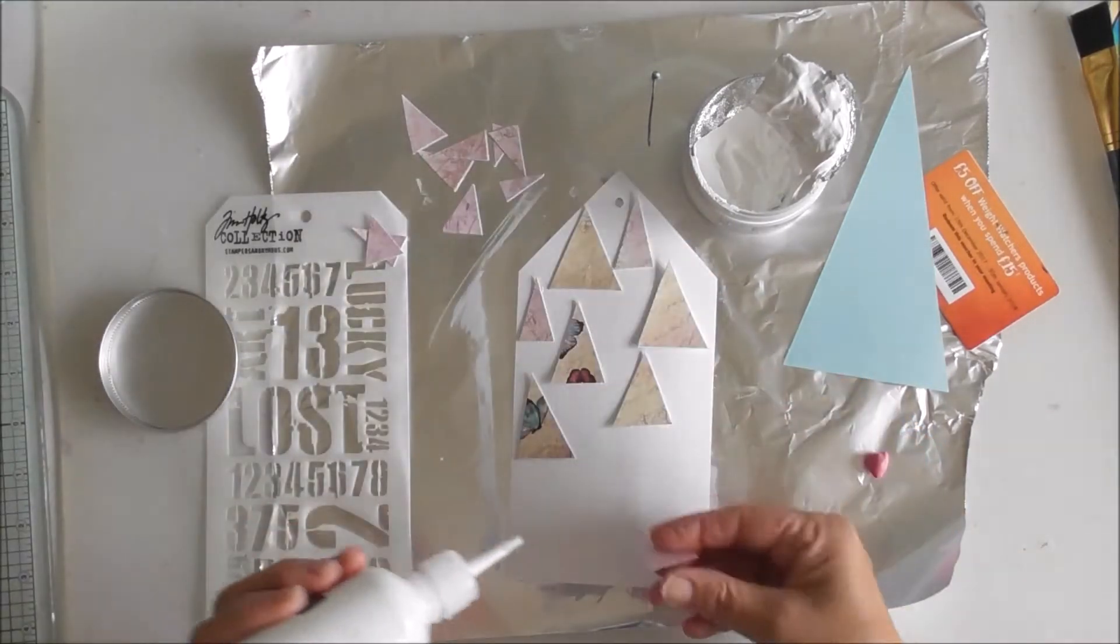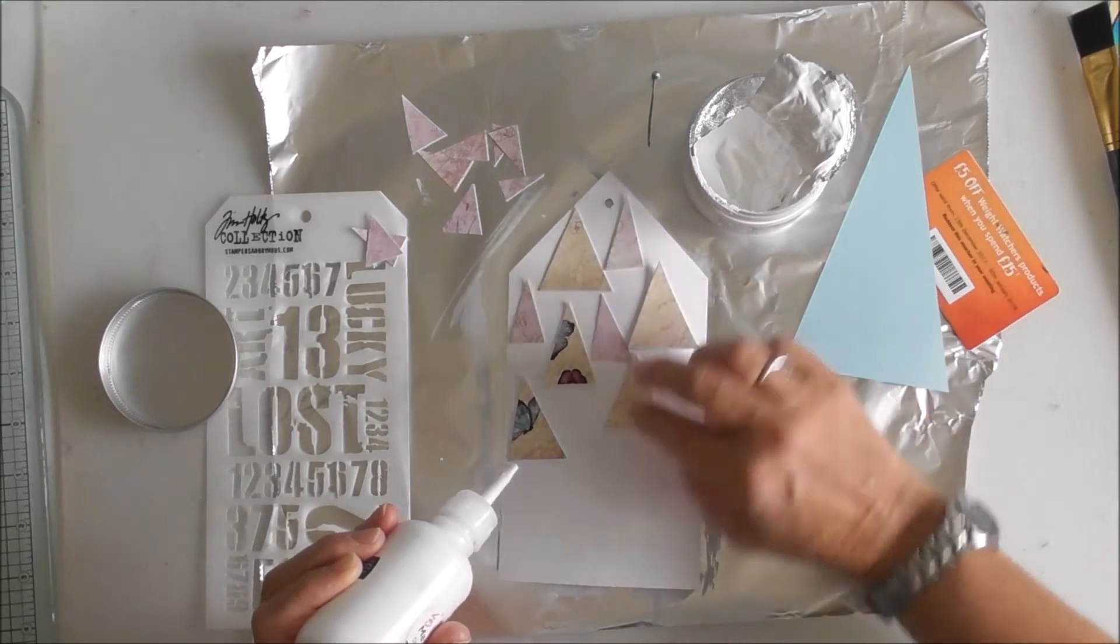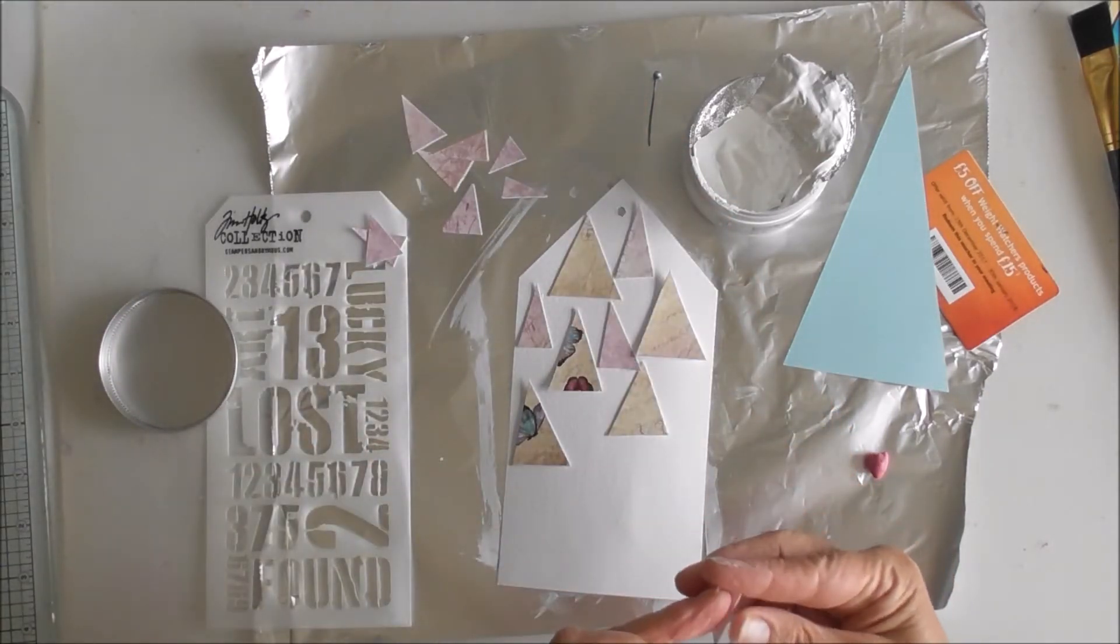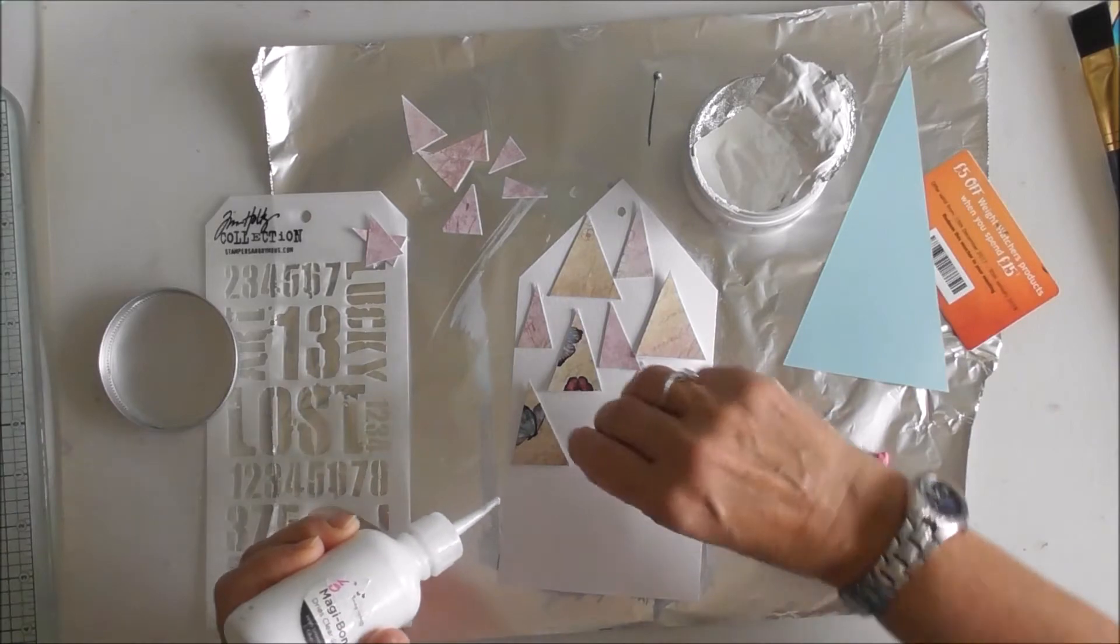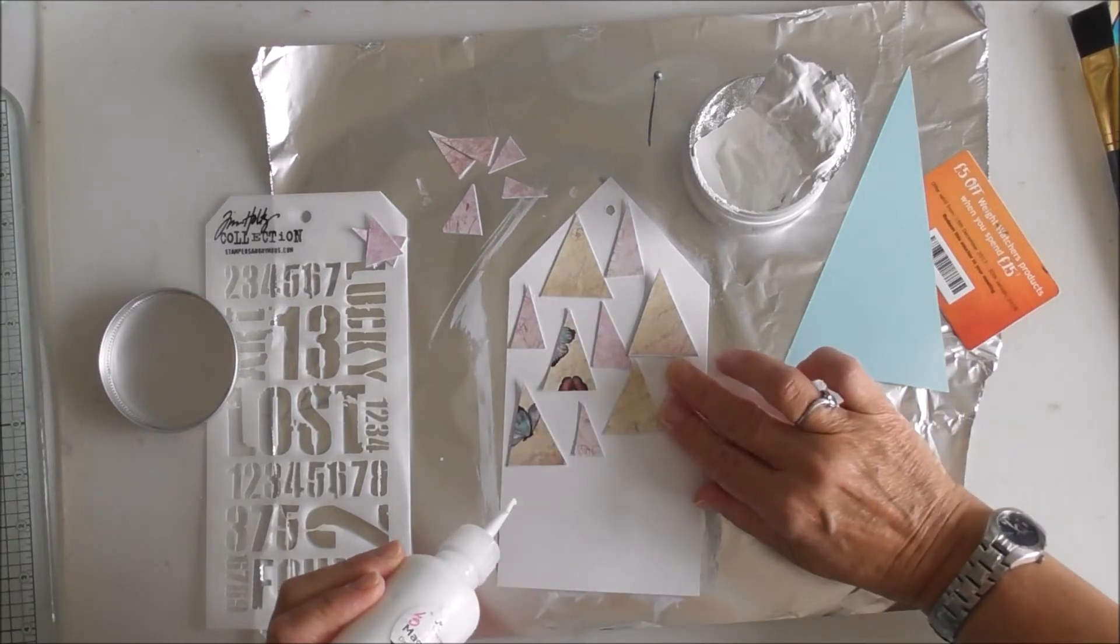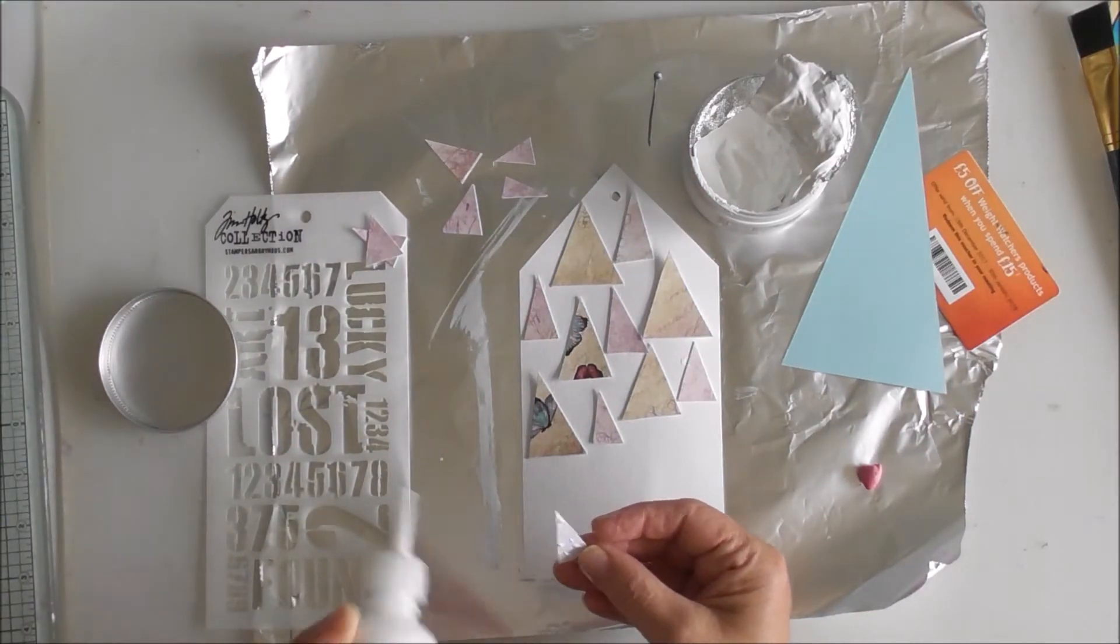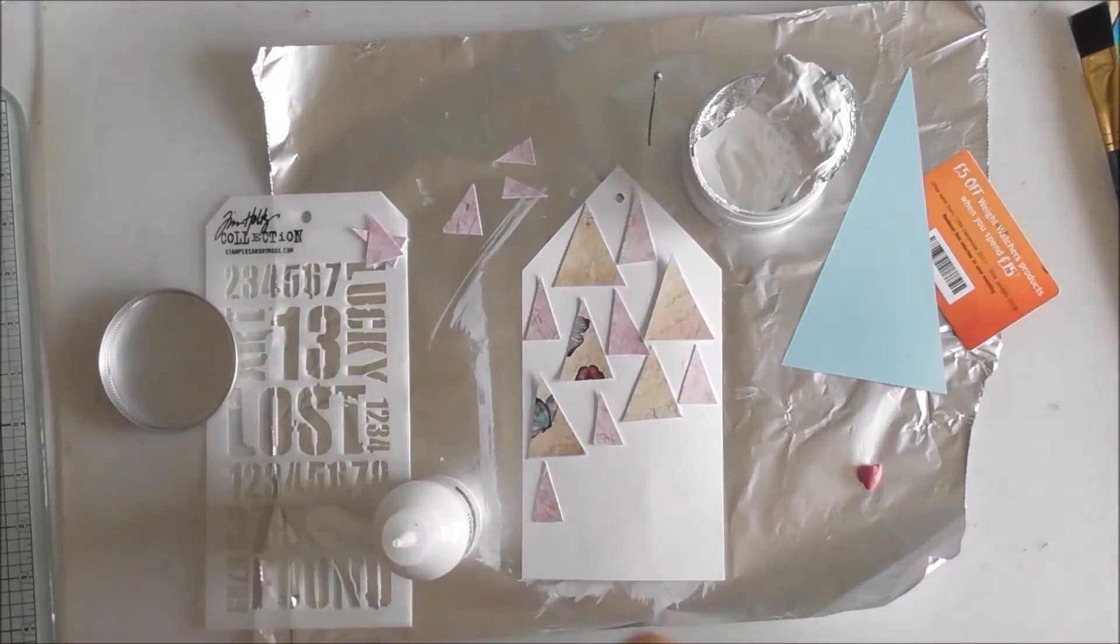They're not true triangles, but hey ho. I believe there are four different types of triangle: equilateral, isosceles, scalene acute, and obtuse triangle. Maths was never my thing. I can add and subtract, but algebra and geometry - no, not my thing at all. I hated maths. My favourite subject in school was English.